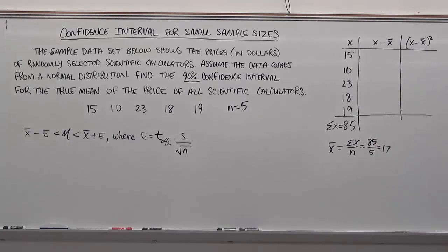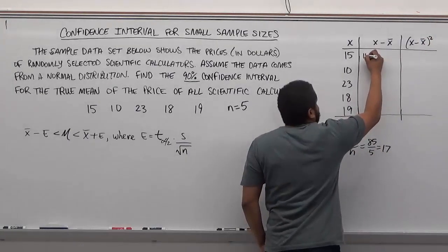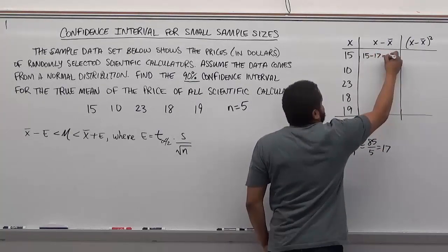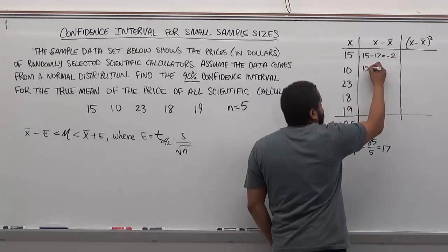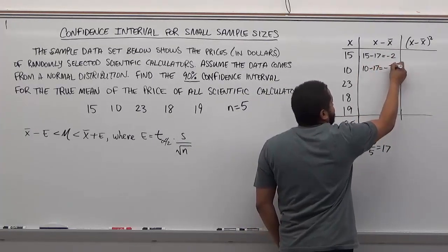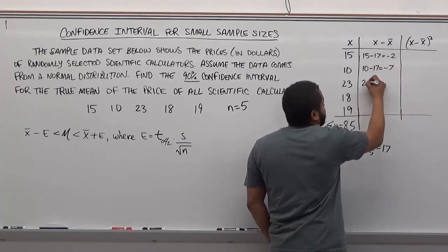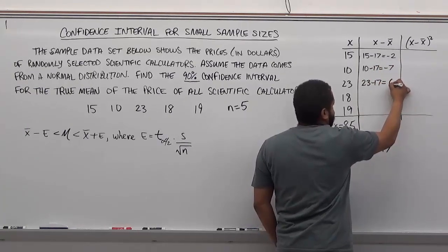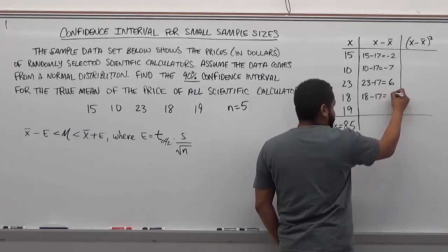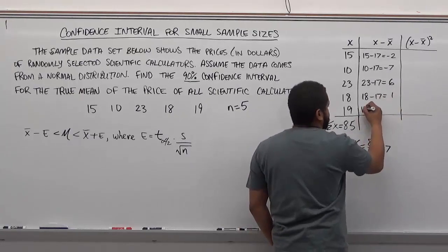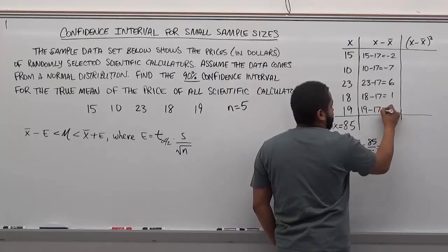So then what we're going to do with this is we're going to take each sample and subtract this newfound mean from each sample and then square the results on this column. So our first one is going to give us 15 take away 17 which is minus 2. Then we have 10 take away 17 which is negative 7. 23 take away 17, that's just 6. 18 take away 17, this is an easy one, it's just 1. And then 19 take away 17, another nice one is just 2.